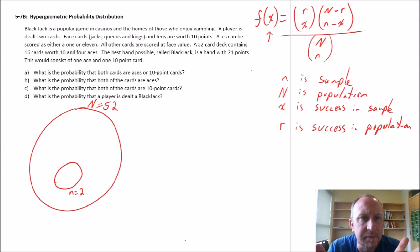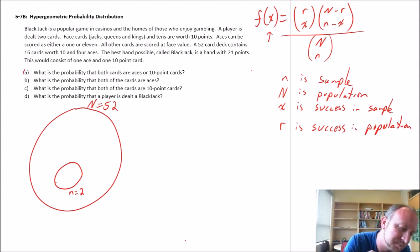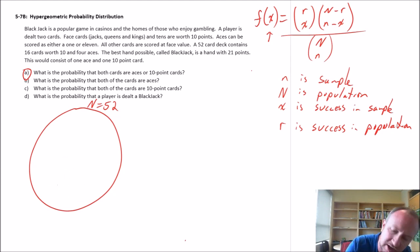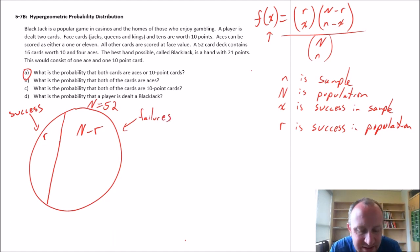Let's see. If we look at part A, what is the probability that both cards are aces or 10 point cards? So what this means, I'm going to divide the deck here. This side is R, this is N minus R. So this side is our success. This side, these are our failures. In this case, we are defining a success as being aces or 10 point cards.